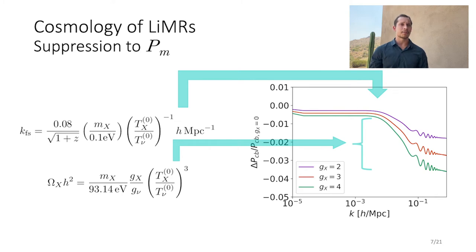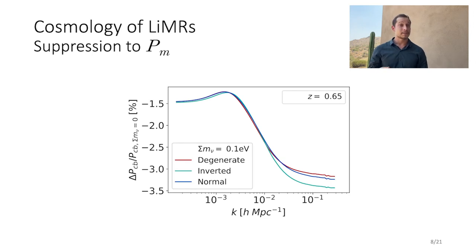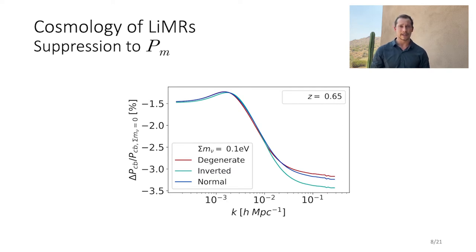Using a modified version of CLASS, these changes are modeled in detail to find the full effect on cosmological observables, which appears as a step-like suppression to the matter power spectrum. This suppression sets in at the free streaming scale and has an amplitude proportional to the LEMUR abundance. Generally, the earlier a LEMUR becomes non-relativistic, the greater the suppression. Assuming the same total neutrino mass, there are slightly different effects on the matter power spectrum for different neutrino mass hierarchies — information we can utilize alongside changes to N_eff to learn about neutrinos and LEMURs more generally.